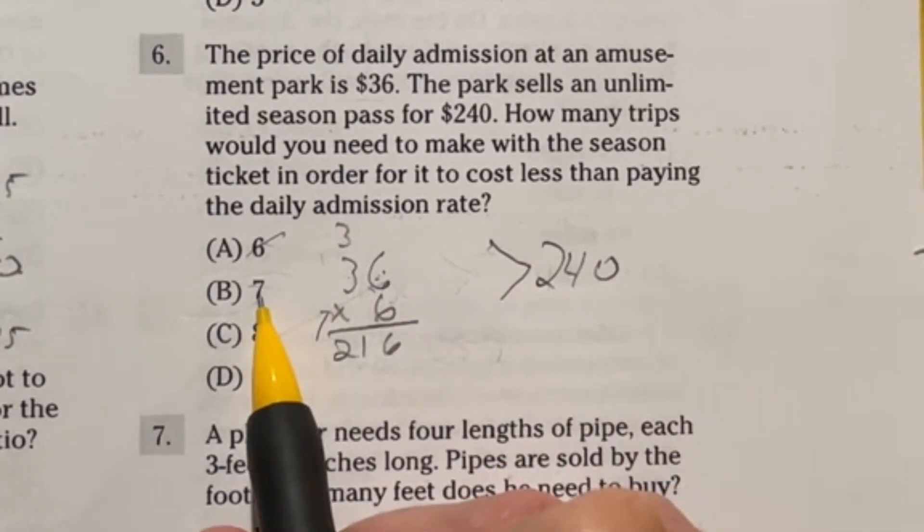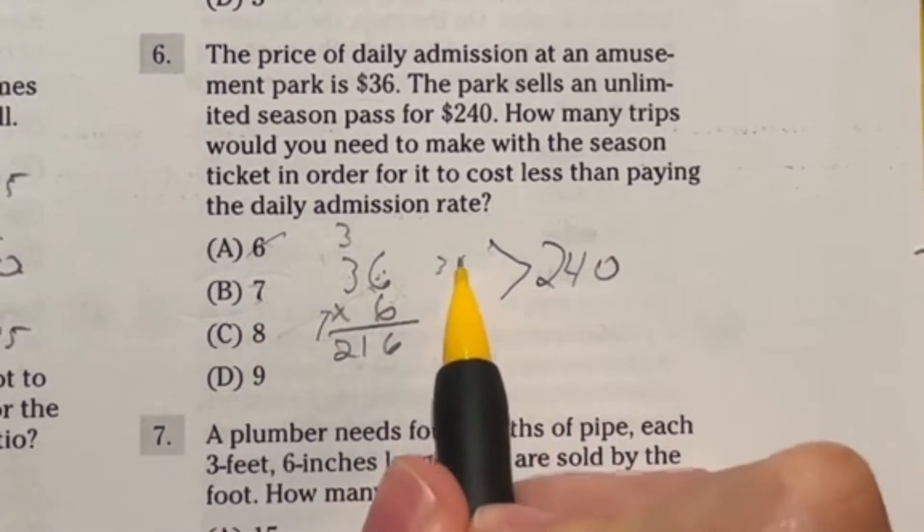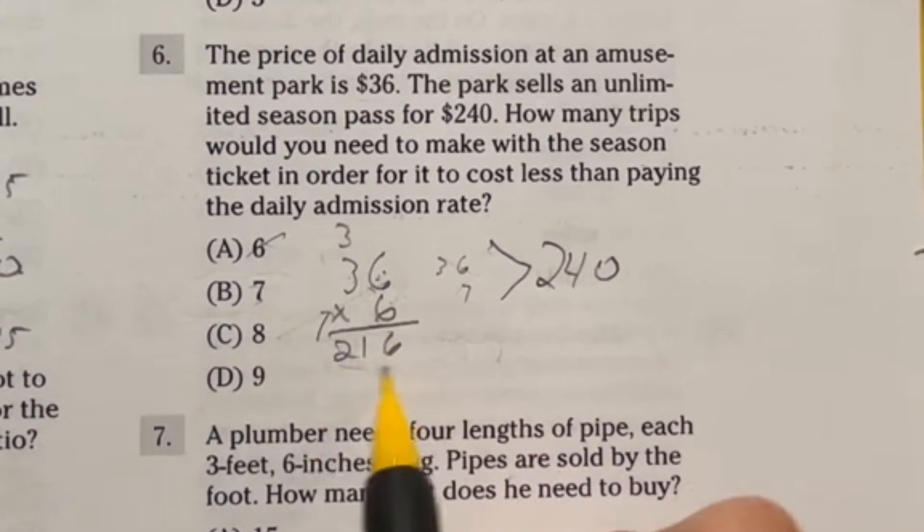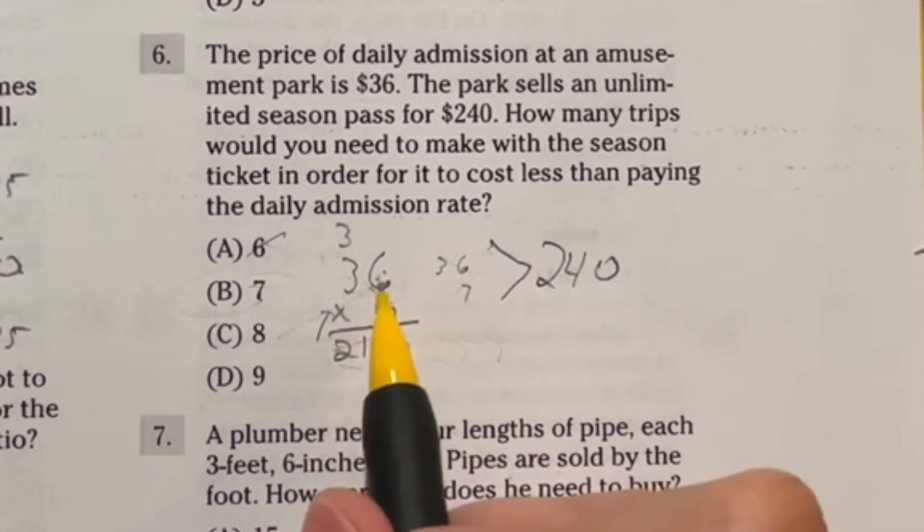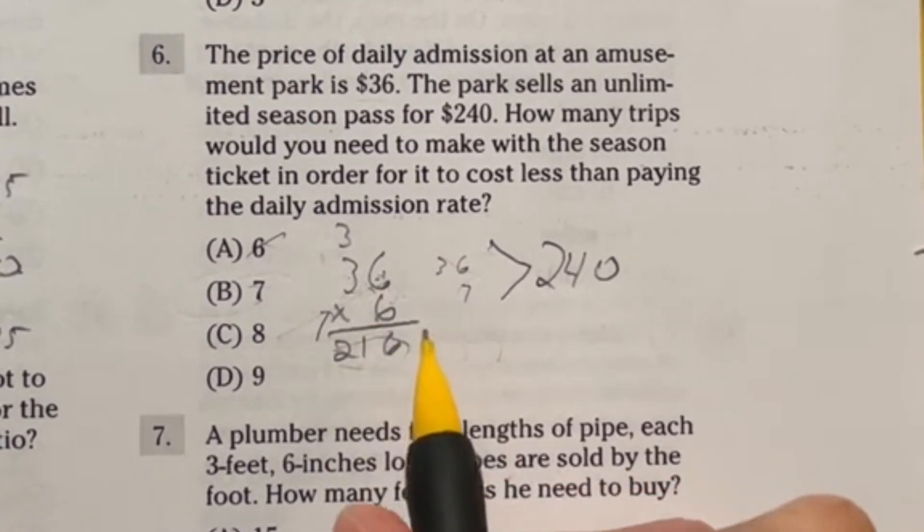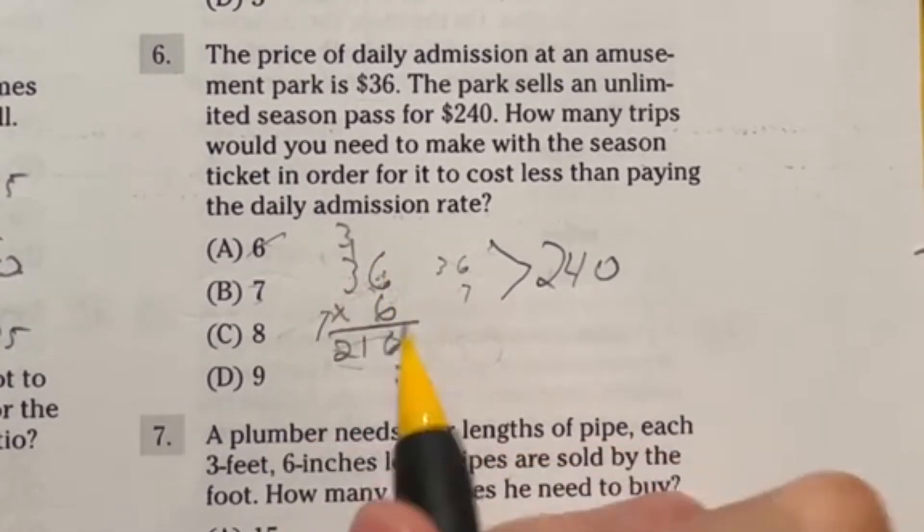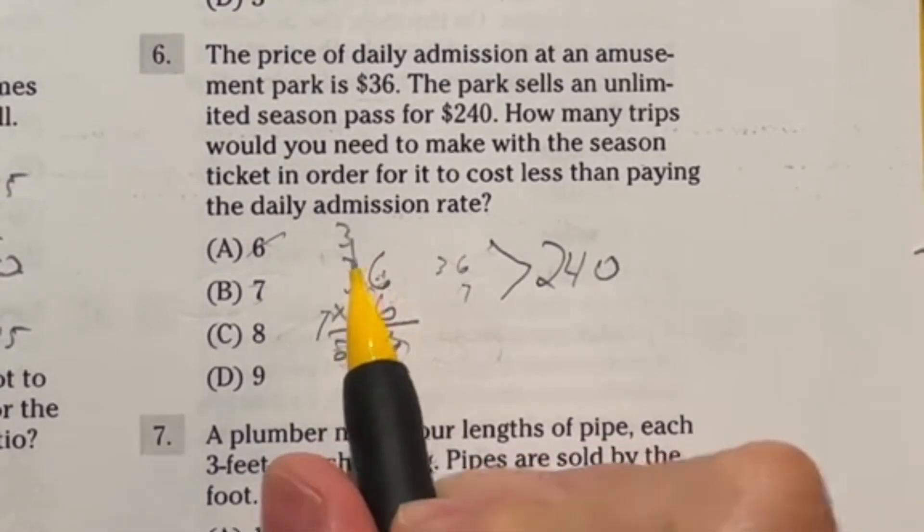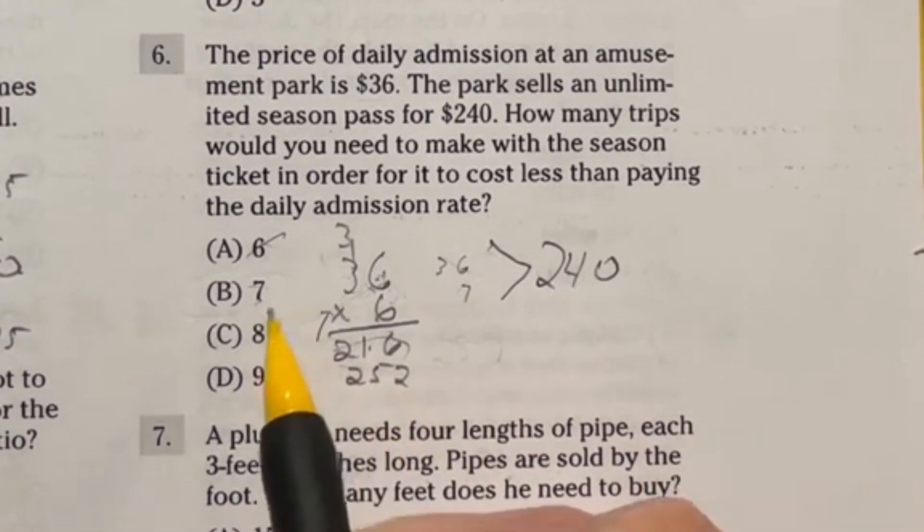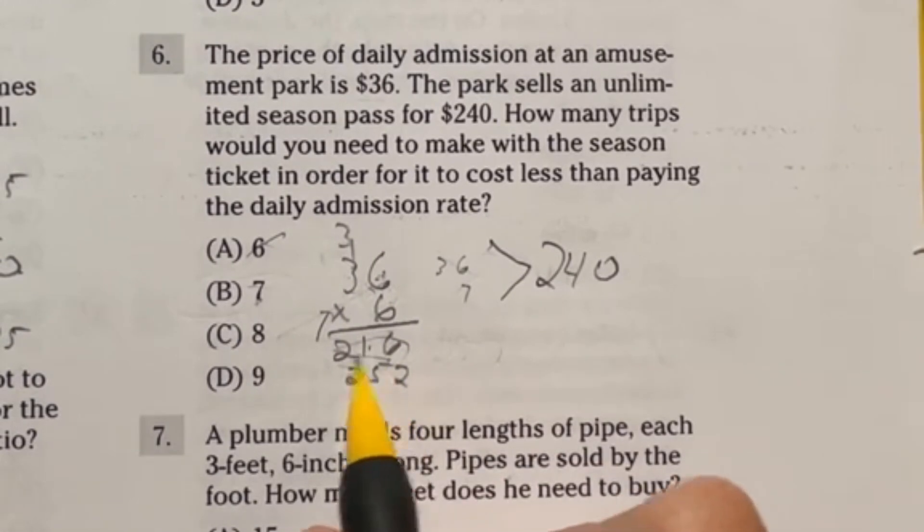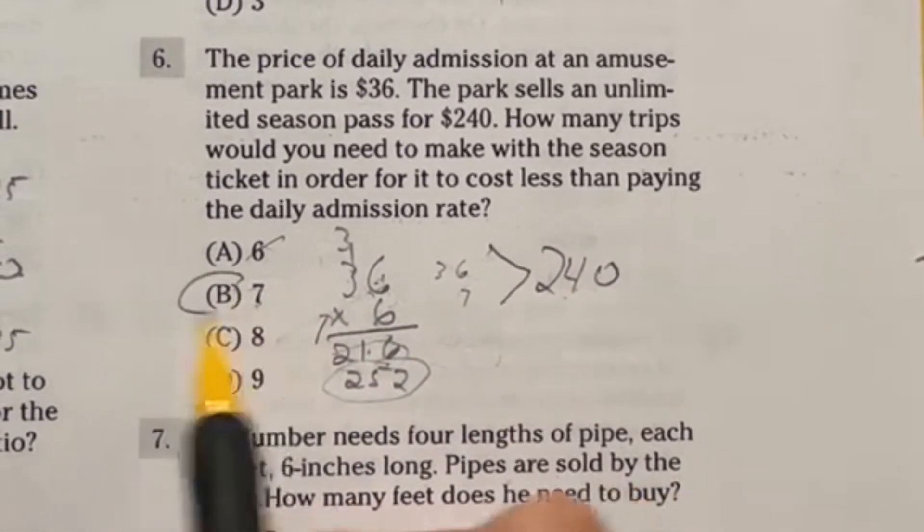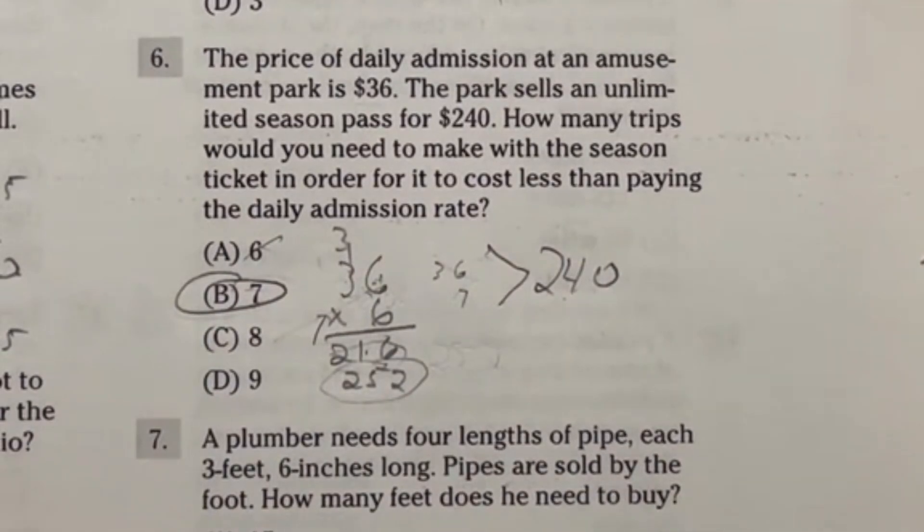Let's move on to the seven. I could do 36 times seven or just take the 216 and add another 36 to it. Let's add six plus six is 12. Carry the one. One plus three is four plus one more is five. And then carry down that two. So if we go up to seven, we're now at 252, which is indeed larger than 240. So seven is where we cross that threshold.